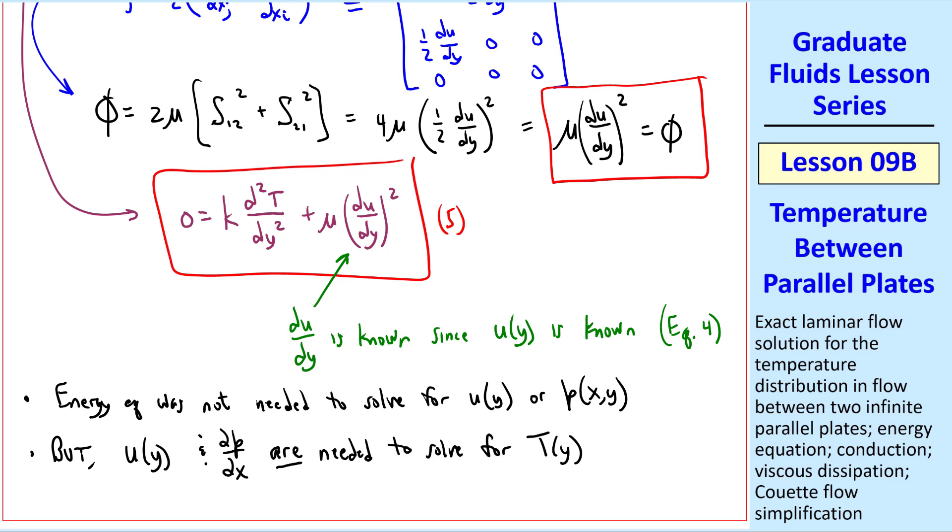So we can say that velocity and pressure are uncoupled from the energy equation. The energy equation is coupled to the velocity field, which is in turn coupled to the pressure gradient, and this is why we could solve for u and p first, and now solve for t later. When you use the Boussinesq approximation, for example, t would also appear in the momentum equation, the Navier-Stokes equation, and you would have to solve all the differential equations simultaneously.